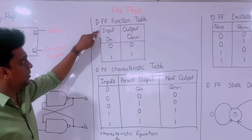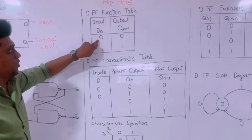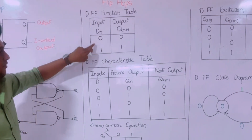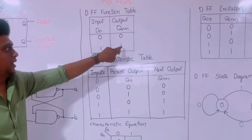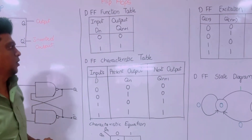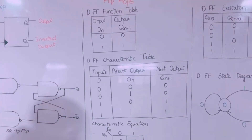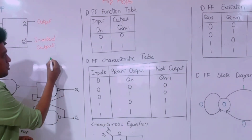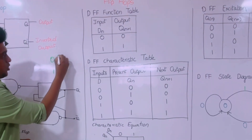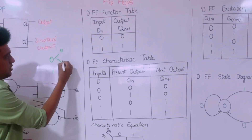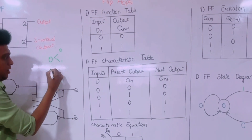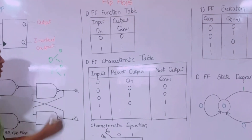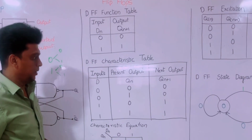In the function table, we can understand that for input zero, we are getting directly the output here. And whenever the input is one, we are getting the output as one. In the characteristics table, we have the same combinations: 0 and 1. Whenever the input is zero, we have two present states, 0 and 1. And for data input one, we are also having two combinations, 0 and 1.